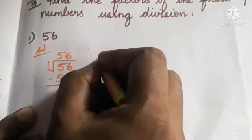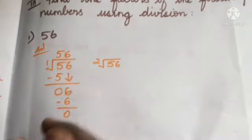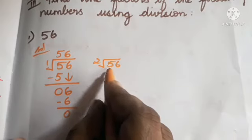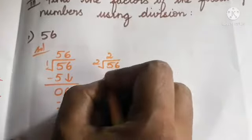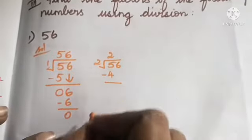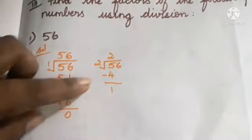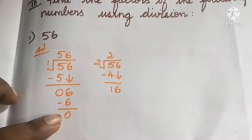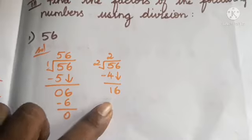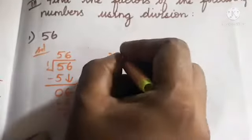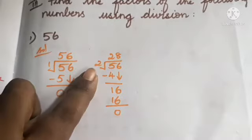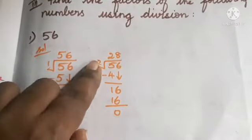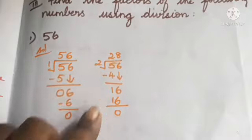Next, divide 56 by 2. In the tens place, how many 2s are in 5? Two 2s are 4, so we write 2 in the quotient and subtract: 5 minus 4 is 1. Bring down 6 to get 16. How many 2s are in 16? Eight 2s are 16; 16 minus 16 is 0. The remainder is 0, so 2 and 28 are factors of 56.